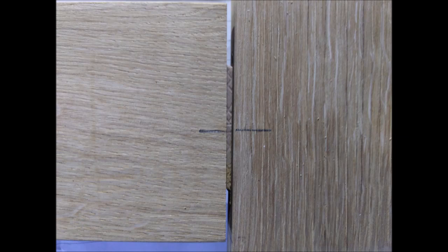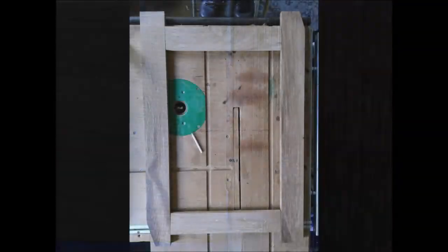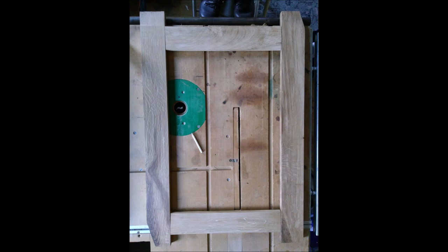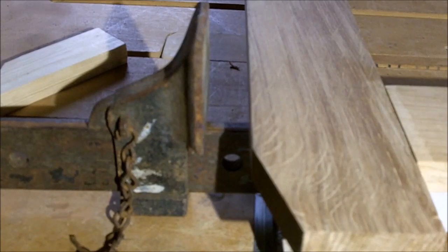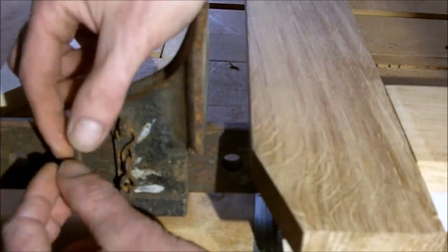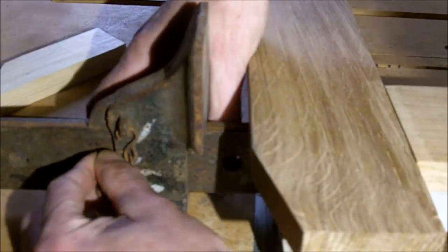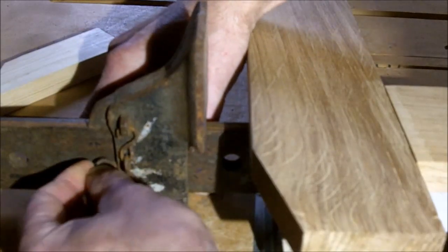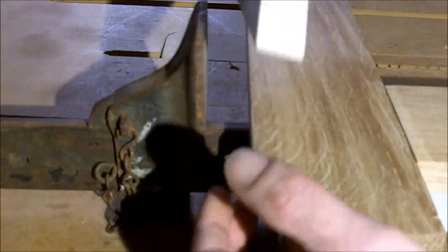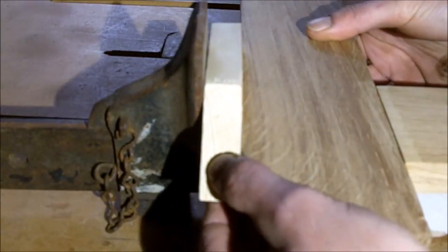Now we are going to dry cramp the frame together. This means without adding glue. We always do this before we add glue to make sure we haven't made any mistakes. We are going to use sash clamps for this process. Set your pin in the adjustable end stop and a waste piece of wood to prevent your oak frame getting damaged.